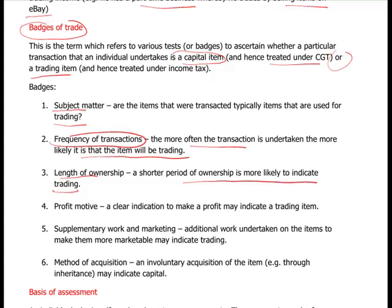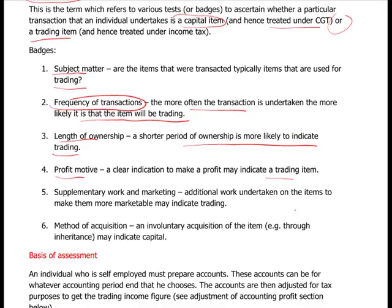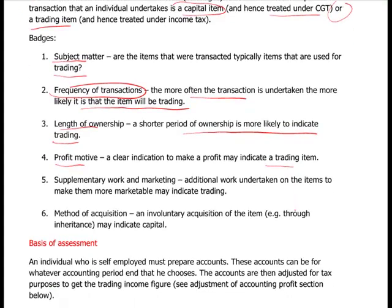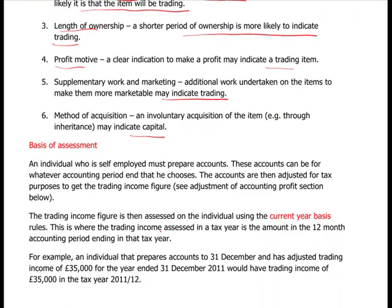Length of ownership: a shorter period of ownership is more likely to indicate trading income rather than capital gains. Profit motive: if you clearly intend to make a profit from a transaction, it probably indicates a trading item. Supplementary work and marketing: if you undertake additional work then you're more likely to be trading. Method of acquisition: an involuntary acquisition, such as an item received through inheritance, may indicate capital rather than trading.